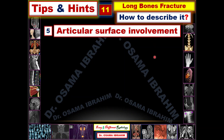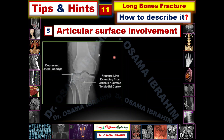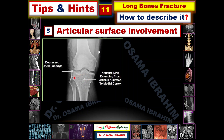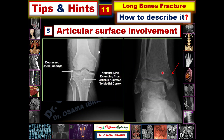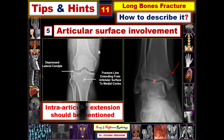Number five is articular surface involvement, and it is very important to mention in the report. For example, this tibia shows articular surface involvement, with the fracture line extending from the articular surface to the medial cortex. This is very important because it affects the joint. Similarly, a medial malleolus fracture with intra-articular extension to the ankle joint should be mentioned in the report. Intra-articular extension should always be mentioned.